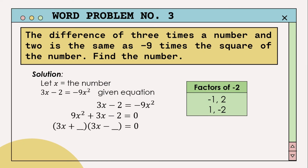The factoring takes the form: quantity (3x plus blank) multiplied by quantity (3x minus blank) equals zero, since 3x and 3x are the factors of 9x squared. To get the second terms, we find the factors of the third term, negative 2: these are negative 1 and 2, or 1 and negative 2. Trying negative 1 and 2: the inner terms give 2 times 3x equals 6x, and the outer terms give 3x times negative 1 equals negative 3x. Their sum is 6x plus negative 3x equals positive 3x, which matches the second term. So negative 1 and 2 are the correct factors.